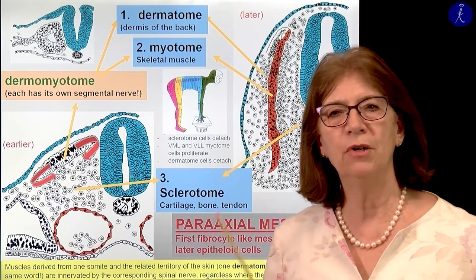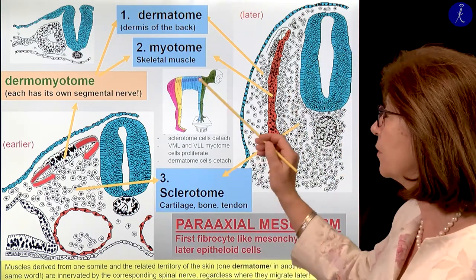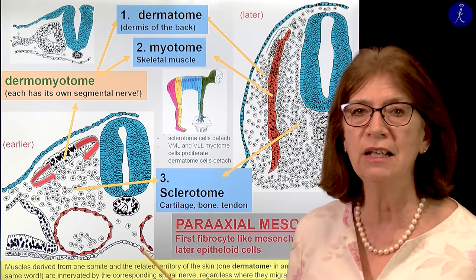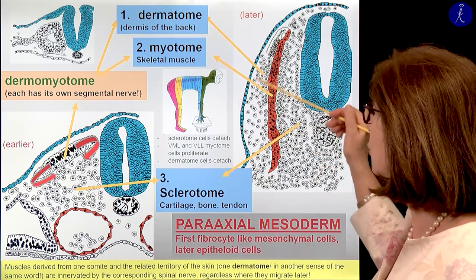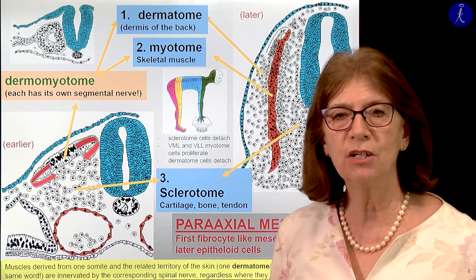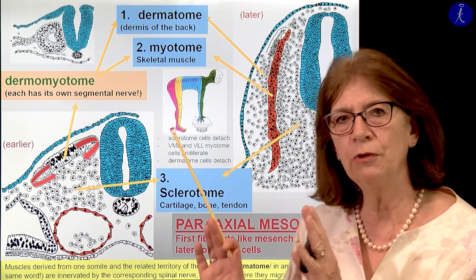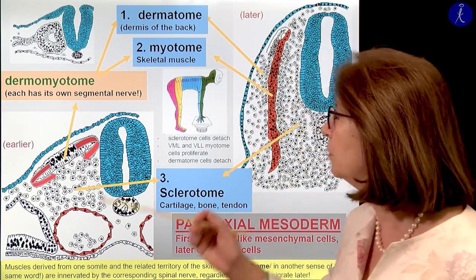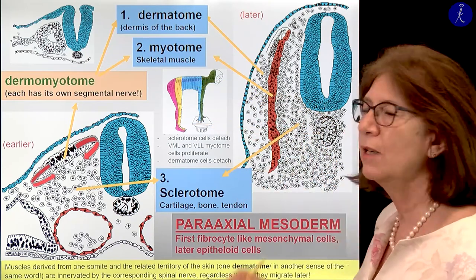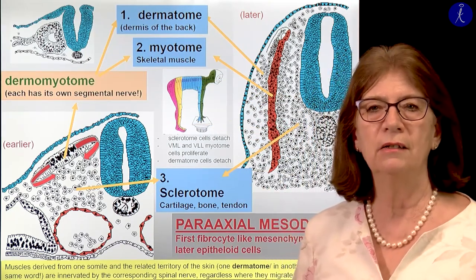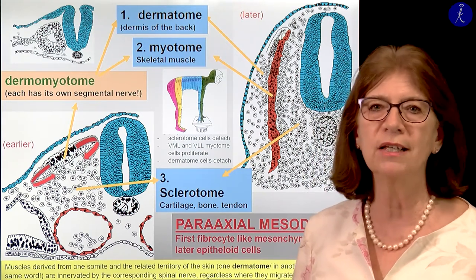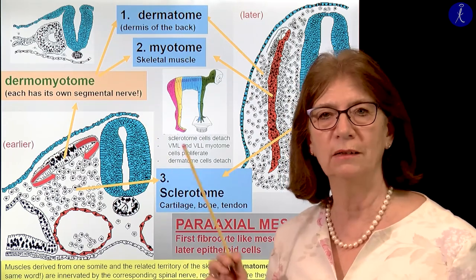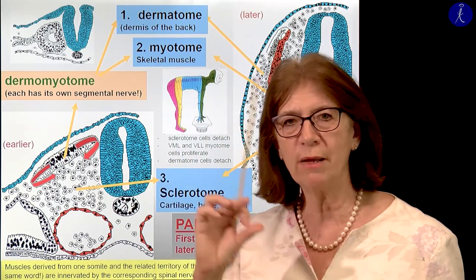You have to be careful because these strips of skin are also called a dermatome — we use the same word, unfortunately, for two things. One meaning is the cells which detach here and give the connective tissue layers of the skin in a certain territory. But if you are speaking about skin innervation, a dermatome is the entire stripe. Why is this important? You will see that herpes zoster is a disease that appears along one dermatome, which is a superficial stripe of the skin.